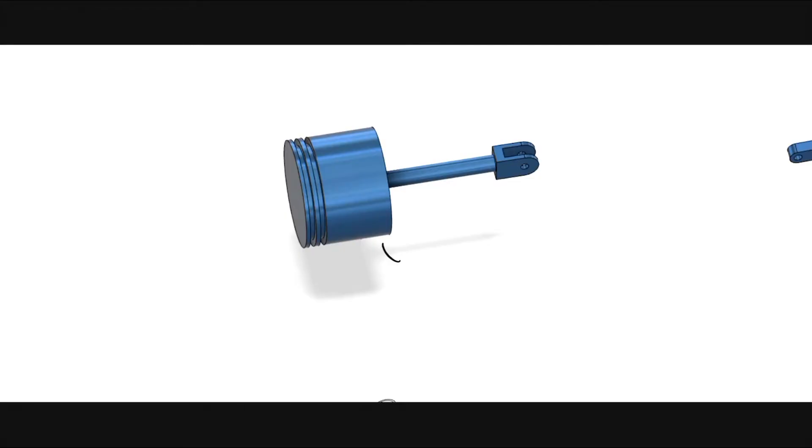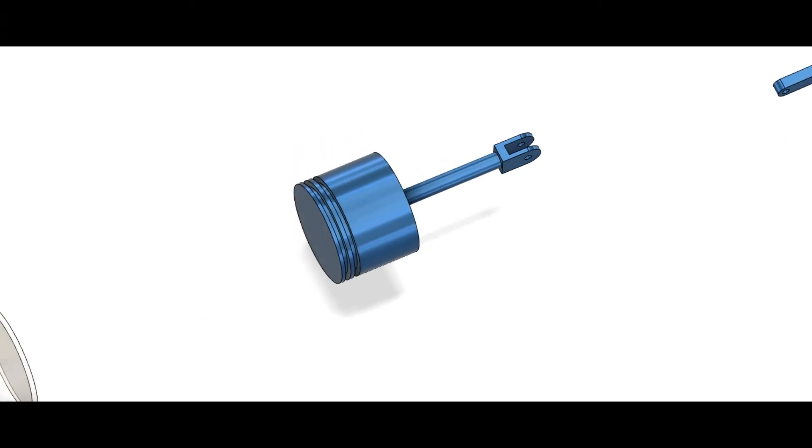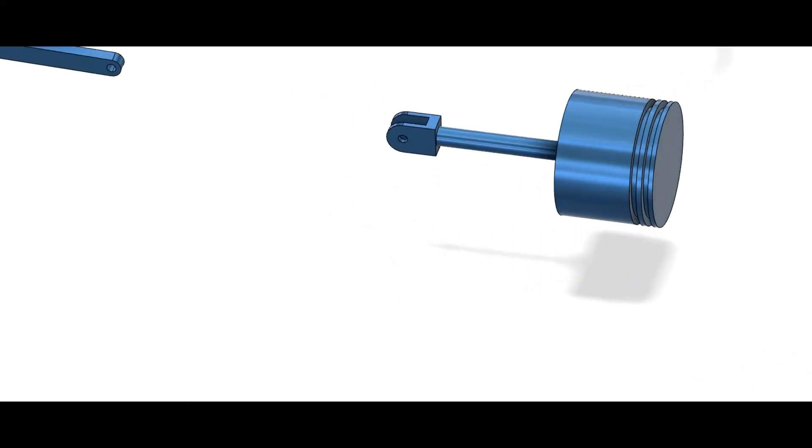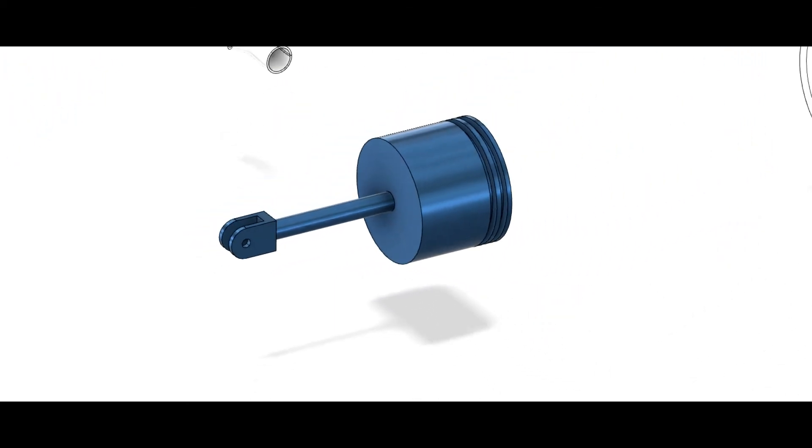Let us zoom in to have a look at the piston. It has a shaft and a big cylindrical head. The head has grooves to fit the rubber rings so that air will not escape from the cylinder. The radius of the piston head is 4.8 centimeters in this design. This will be the r in the pi r squared h equation.